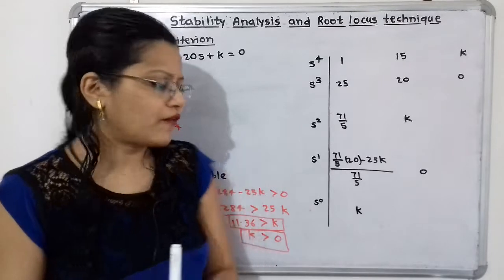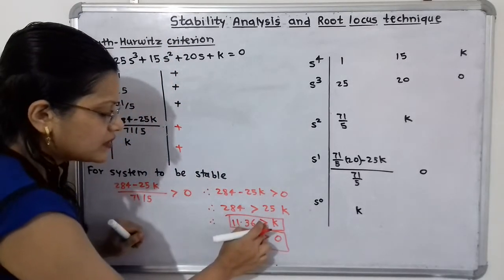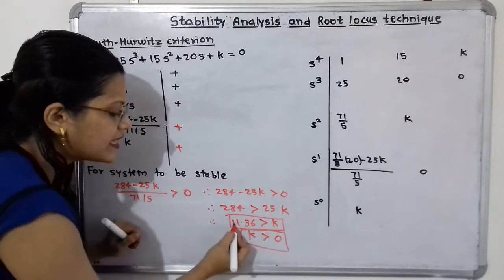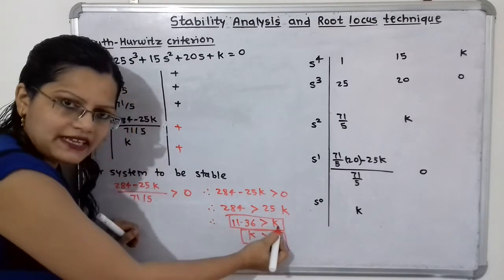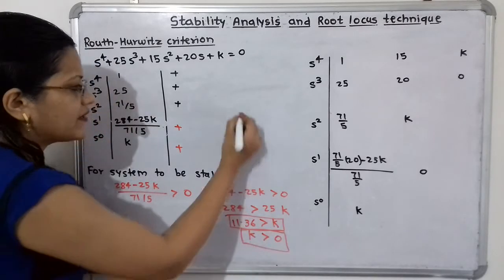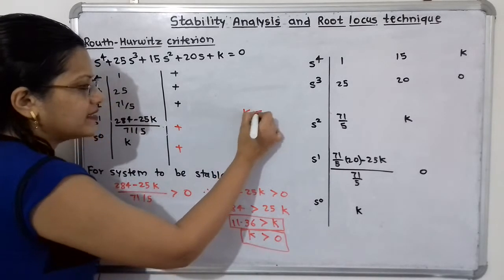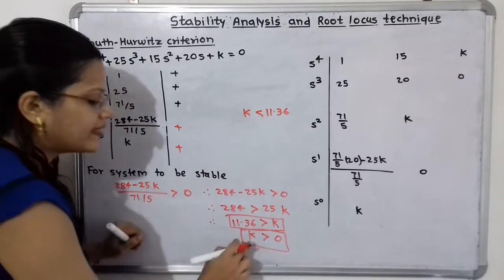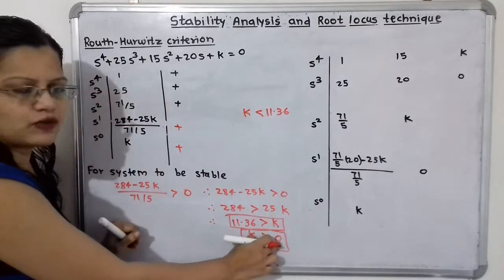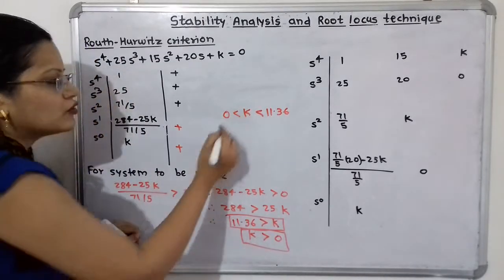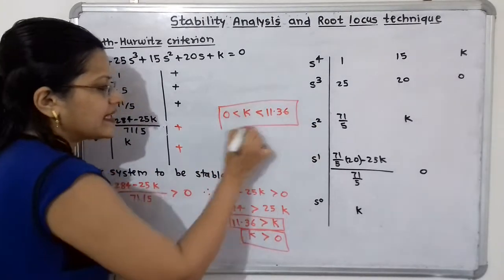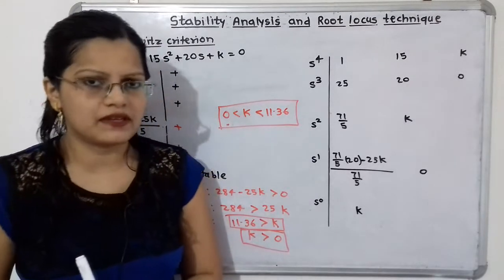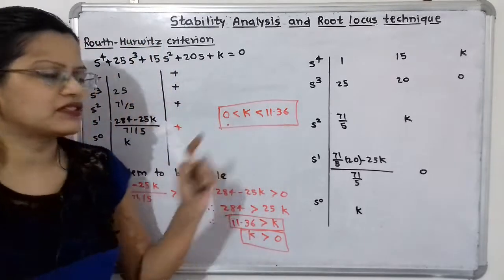So the range of K for the system to be stable is: 0 is less than K is less than 11.36. When both conditions are satisfied, all elements in the first column have the same positive sign and the system is stable. This is the answer to the first question.